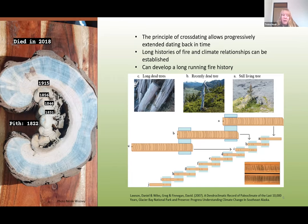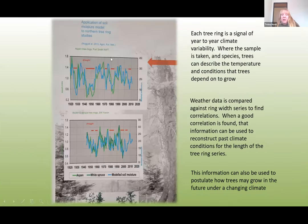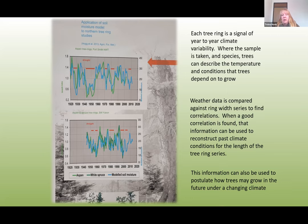The more events we have, the better we can establish a reliable long-running history. Tree rings produce a signal of year-to-year climate variability. Where the sample is taken and the species can describe the temperature and conditions that the tree depends on to grow. So in southern Alberta in the front ranges, the trees may have a different climatic driver than a spruce tree in the Northwest Territories. By measuring the trees and graphing them against different climatic variables, we can see what drives the growth of those trees.